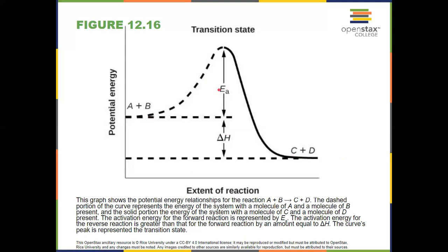So for this reaction to occur, the sum of the kinetic energies of A and B, the reactants, when they collide together, must be higher than the activation energy so that they can overcome that barrier and form the products, and the reaction can proceed.